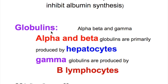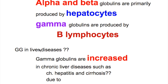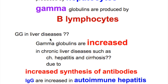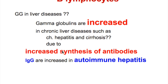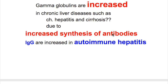Globulins. There are three types: alpha, beta, and gamma globulins. Alpha and beta globulins are primarily produced by hepatocytes, whereas gamma globulins are produced by B lymphocytes. What happens to gamma globulin in liver disease? Gamma globulins are increased in chronic liver diseases such as chronic hepatitis and cirrhosis due to increased synthesis of antibodies.